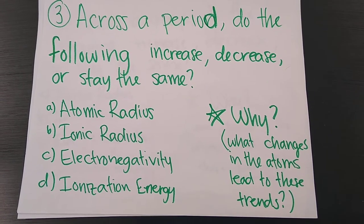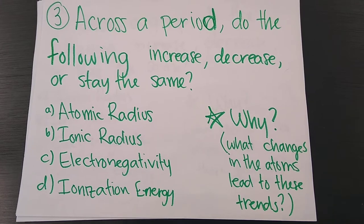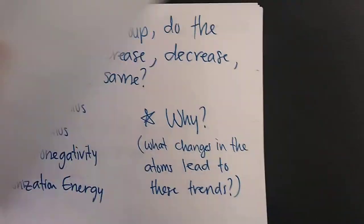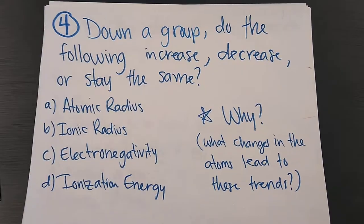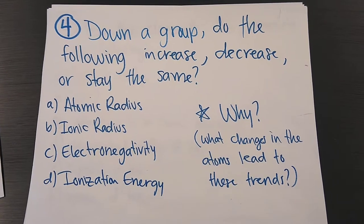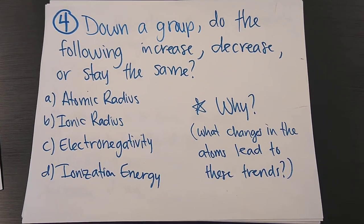Okay, so atomic radius, ionic radius, electronegativity, ionization energy. Alright, same question for down a group. As you go down a group, do the following increase, decrease, or stay the same? Why?